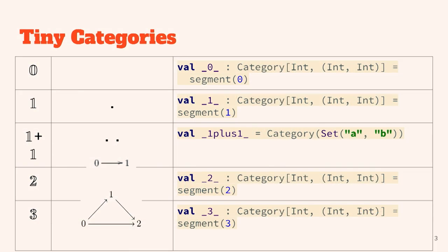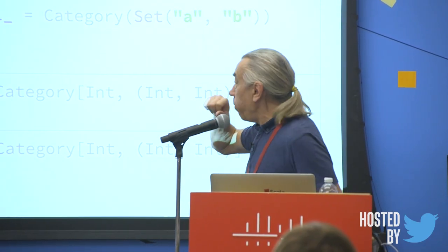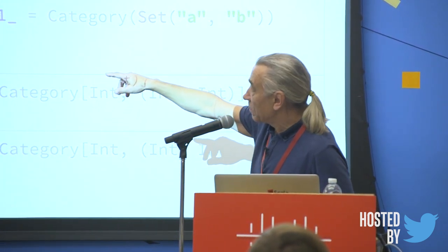Here are some categories I started building — I built them in Java, I built them in Scala. The first category is called zero — it's invisible because it has zero objects and zero arrows. In the Scala code available on GitHub it's denoted as underscore-zero. Category one consists of one object — I don't draw identity arrows — so it consists of just one object, and that's it.